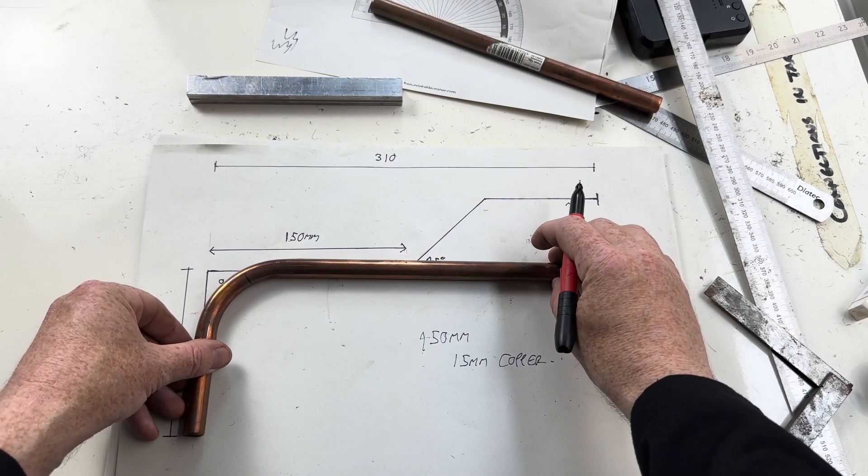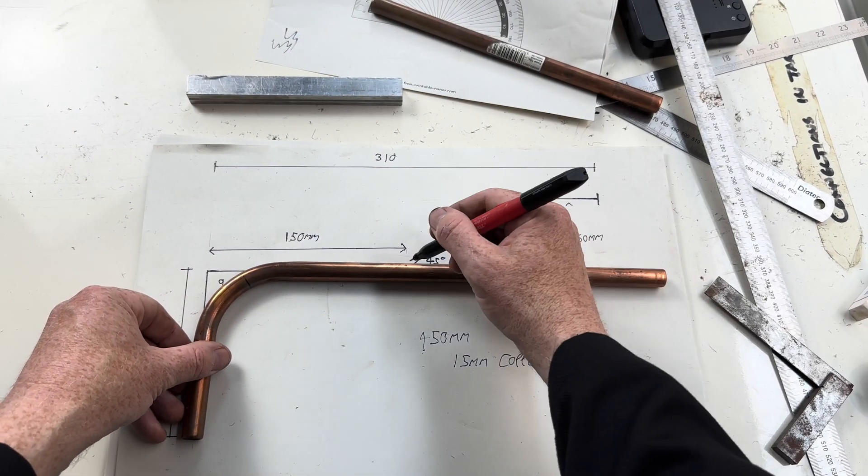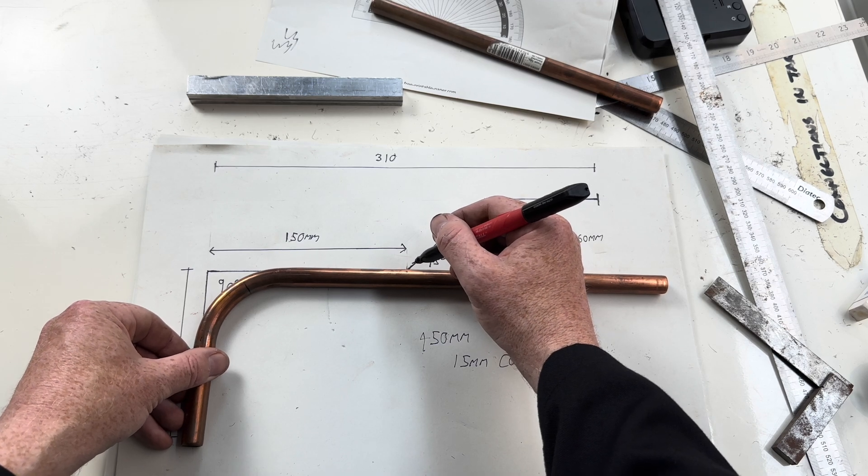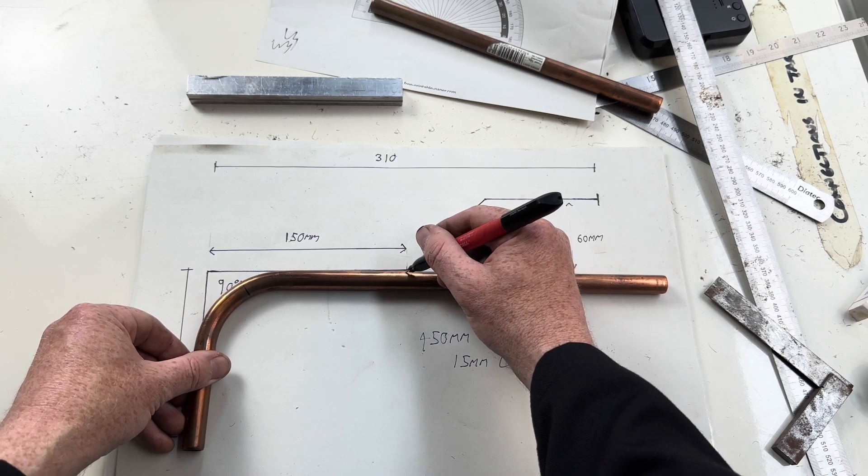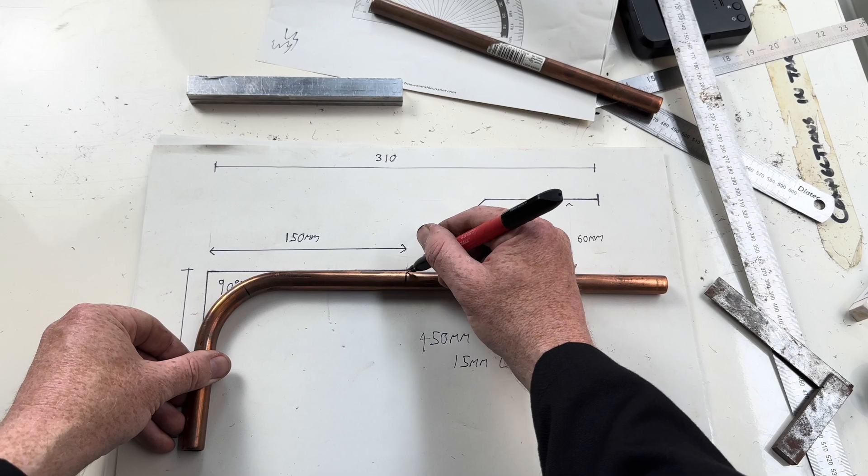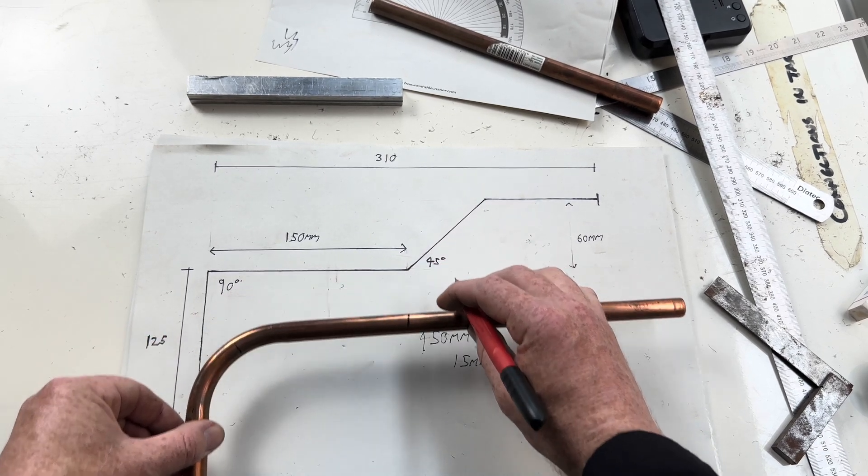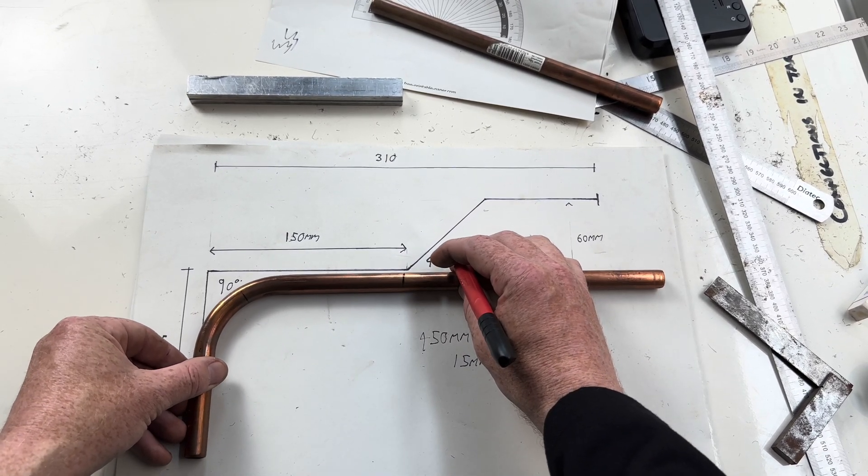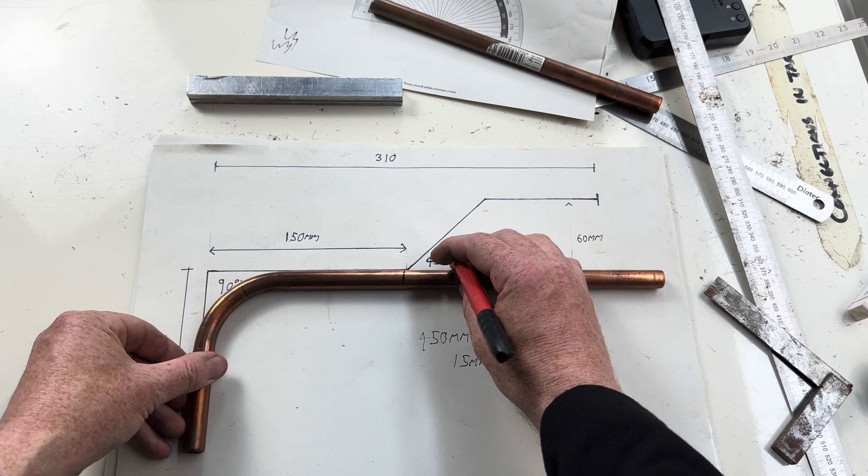You now need to mark the centre of the 45 degree bend. When we do this we need to make sure that the centre of the vertical 90 degree pipe is in line with the line.